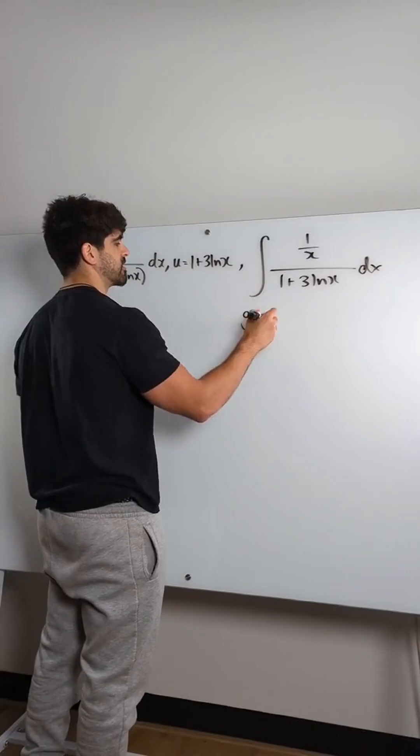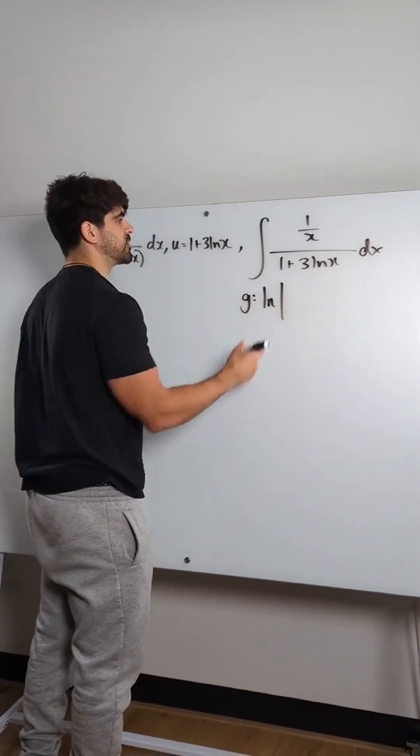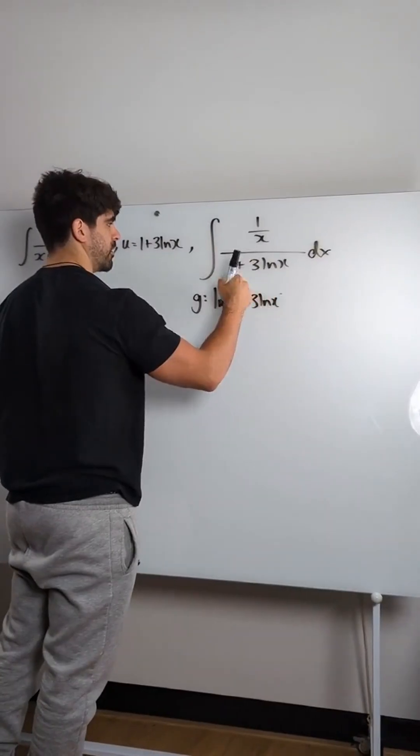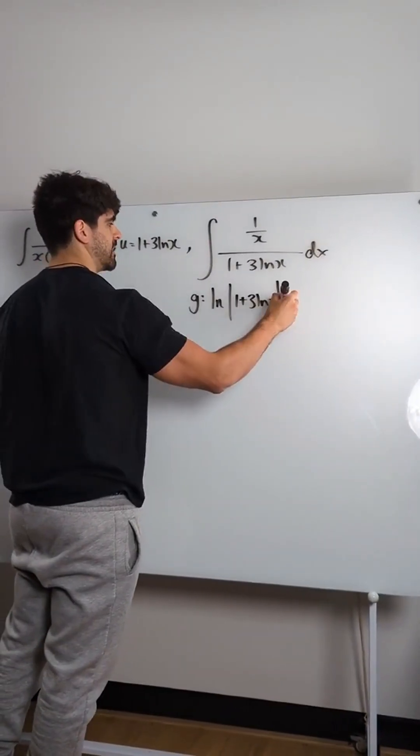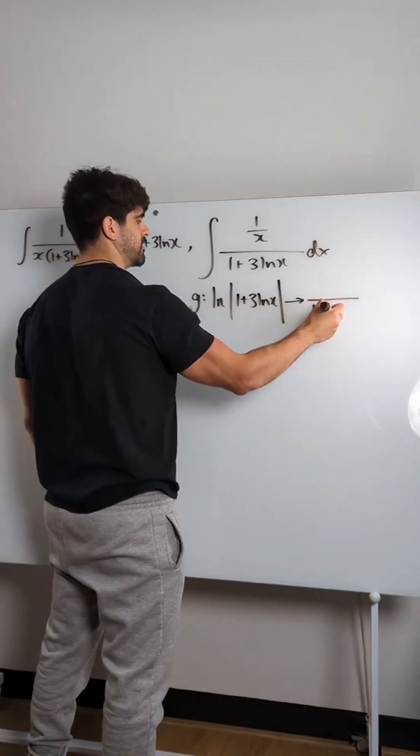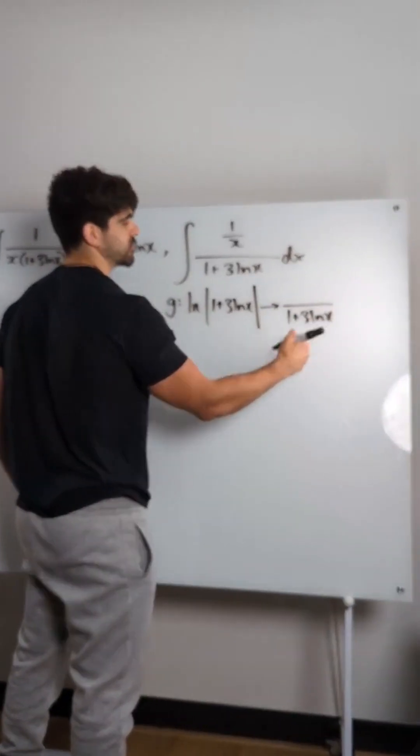I'll show you. You guys know about my guess method. If I do ln of the denominator, 1 plus 3 ln x, and differentiate that. Differentiating ln, we reciprocate what's inside, and we differentiate this. 1 goes, ln x goes to 1 over x